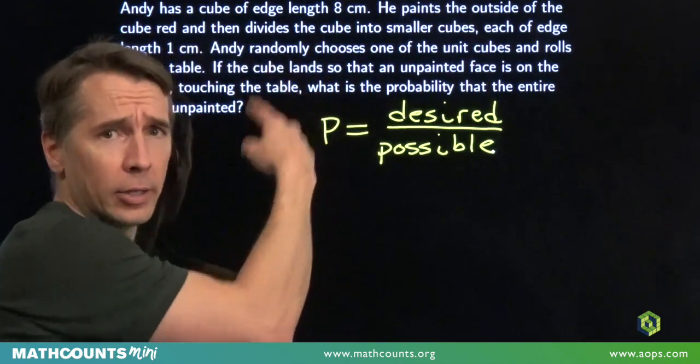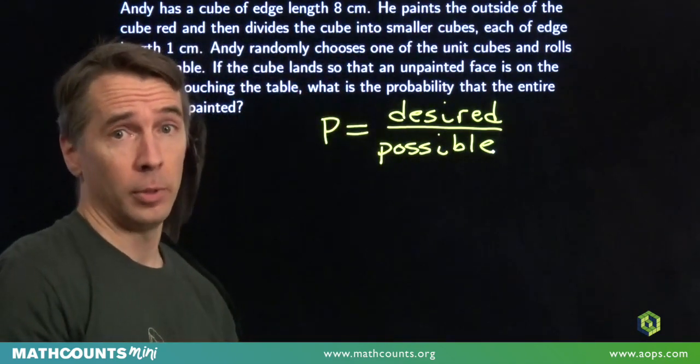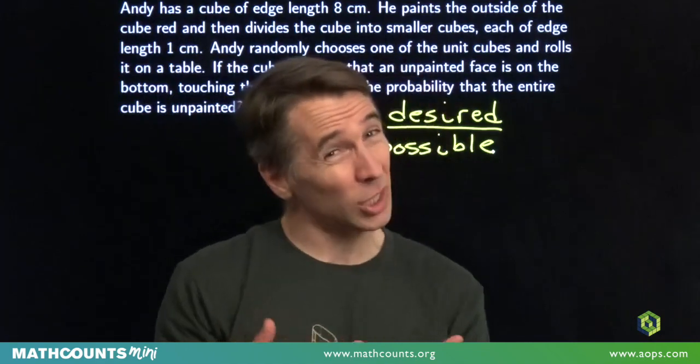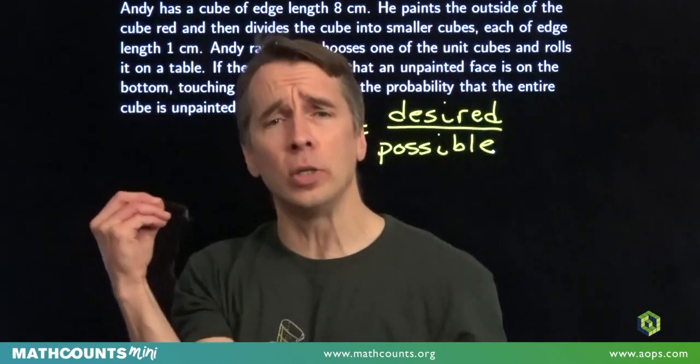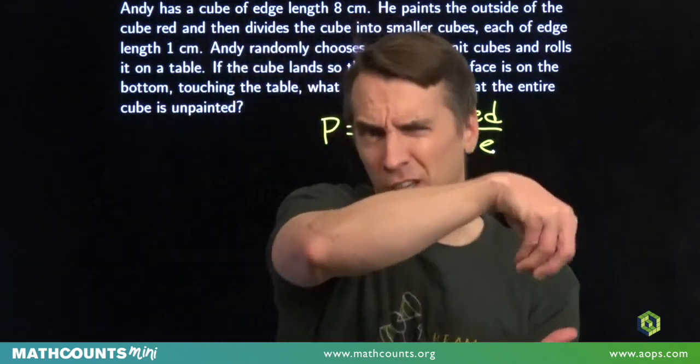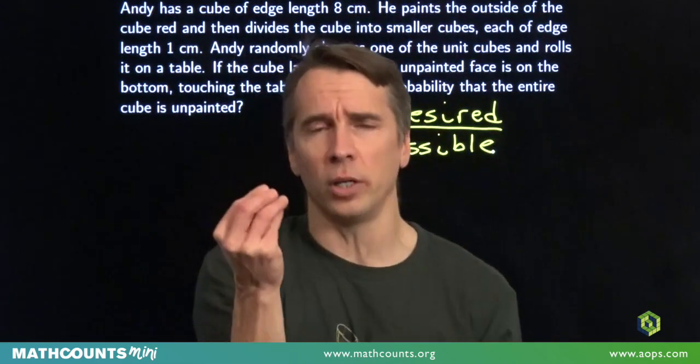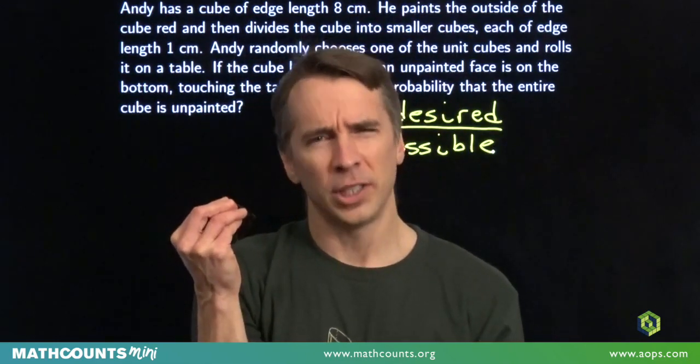Now what are the equally likely outcomes we're talking about in this problem? Well, it looks like it's the unit cubes themselves. When Andy reaches in and grabs one of these unit cubes at random, it's equally likely that he chooses any one of these cubes. But then he rolls it.